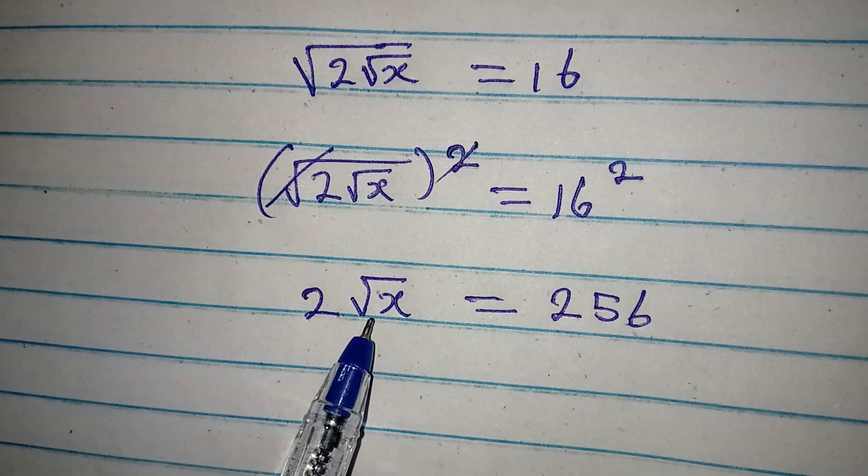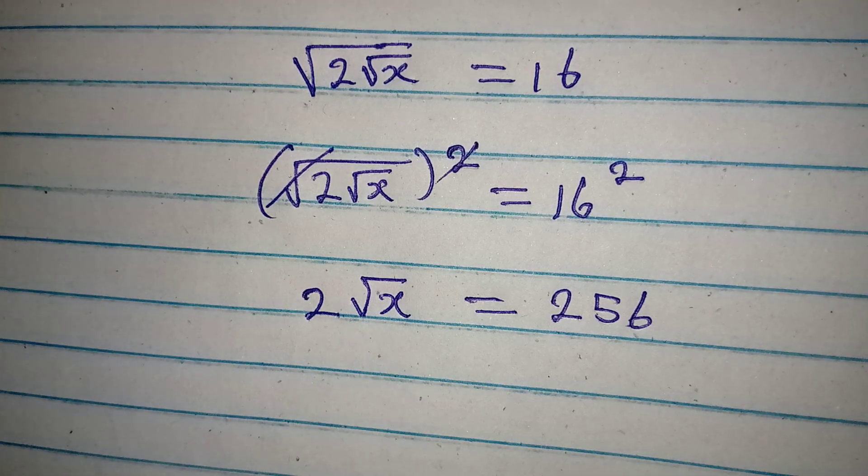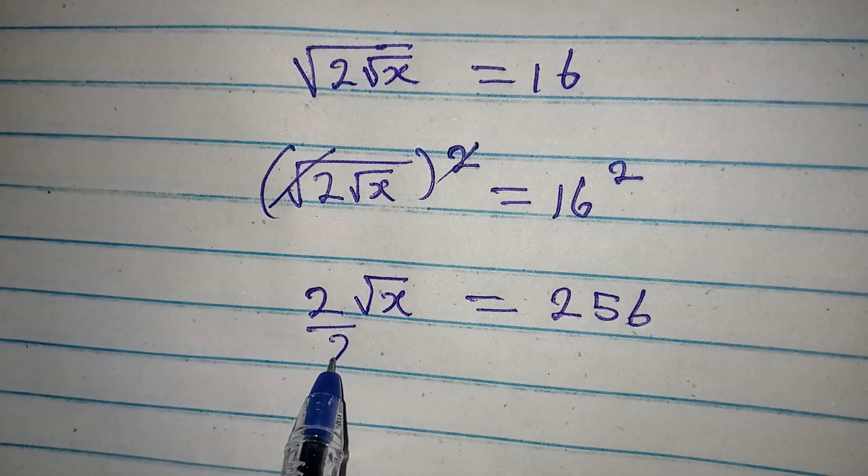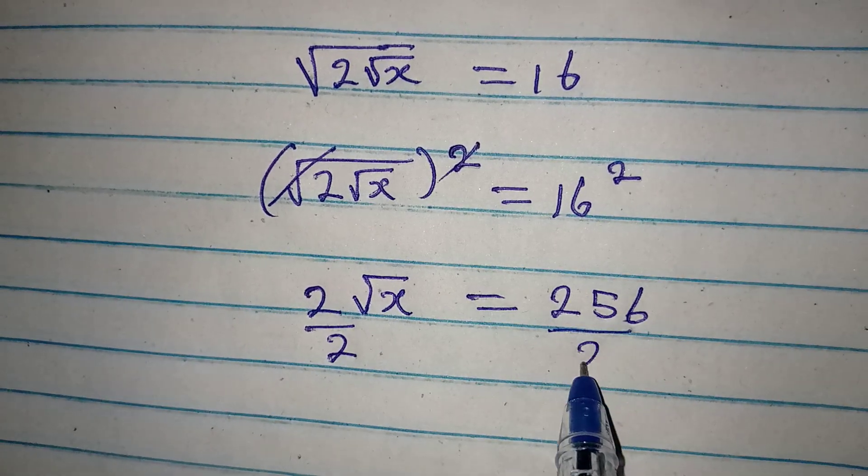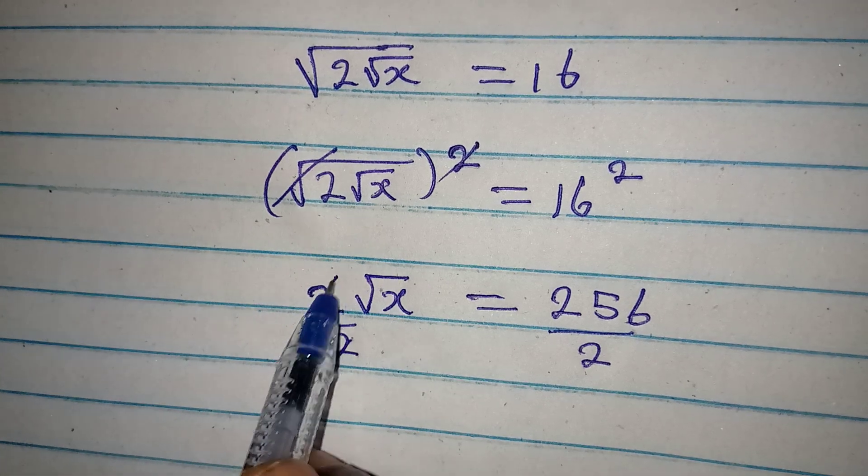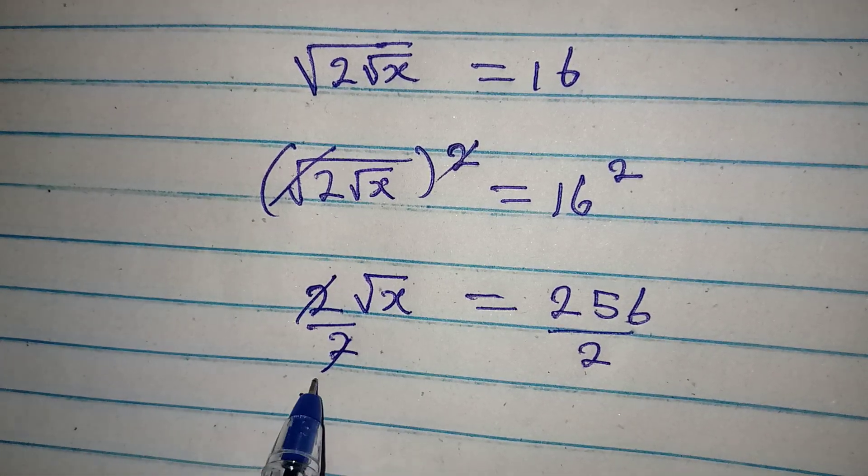Now we are to square it again to remove this, but before then it is advisable that we divide by 2. That way we'll have a lesser value on the right. This will go with this and then square root of X will be equal to...